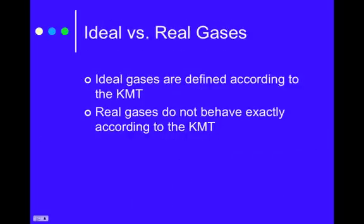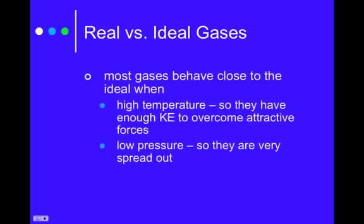Alright, so what's the difference between ideal and real gases? Well, first of all, ideal gases are defined exactly according to the kinetic molecular theory. Whereas, a real gas might not be obeying one or two or maybe all of the assumptions of the KMT. So what can you do to get a gas to behave itself? Well, if you get a gas really good and hot. The hotter it is, the faster it travels. And the faster it travels, the more likely its collisions are to be elastic. And there's not going to be any forces between the gas particles.